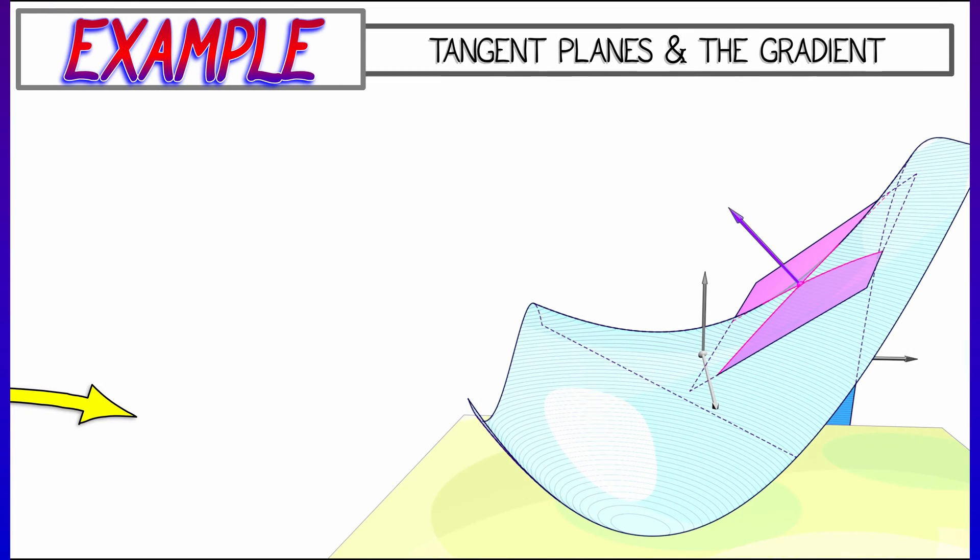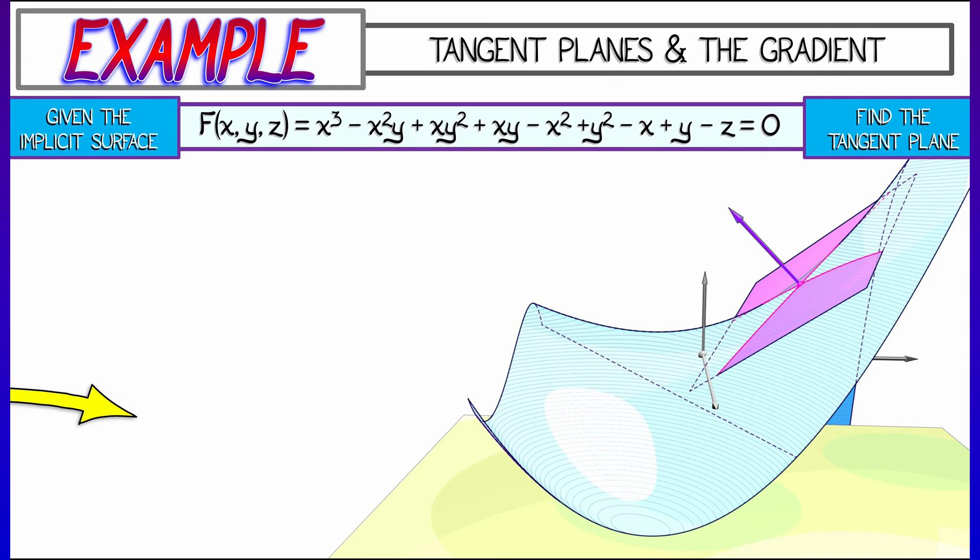In general, let's look at a specific example. Consider the function f given by x-cubed minus x-squared y plus xy-squared plus xy minus x-squared plus y-squared minus x plus y minus z equals zero. That's a mouthful.